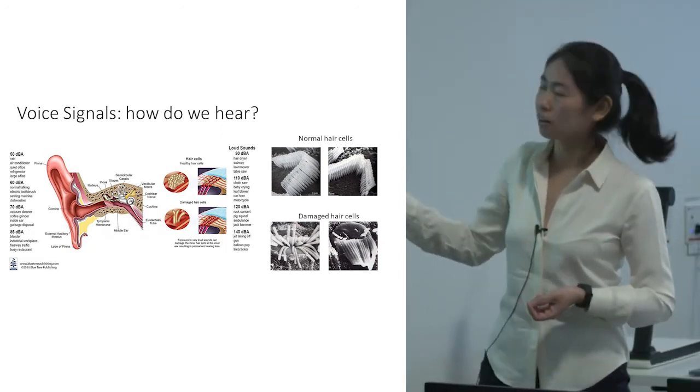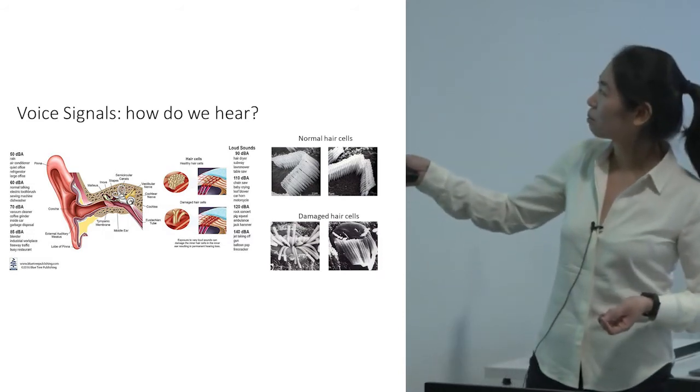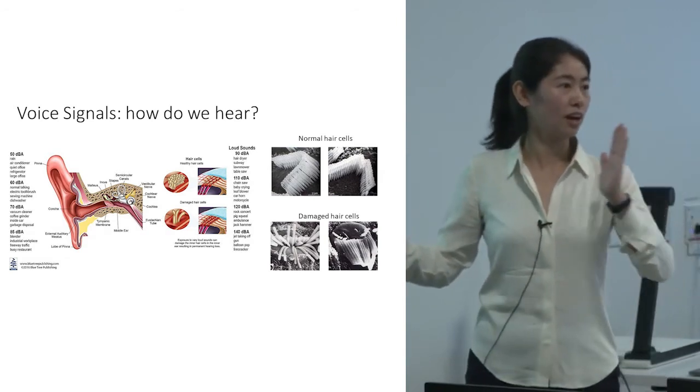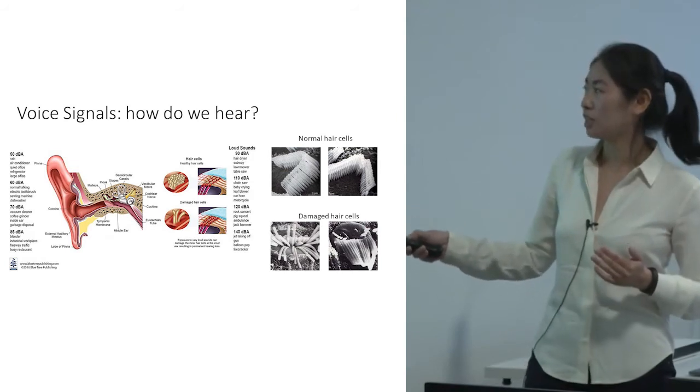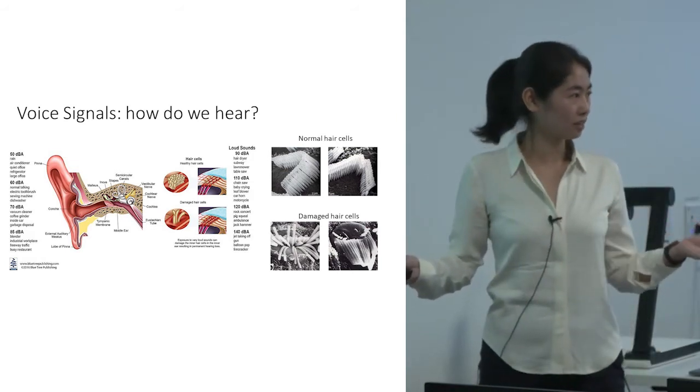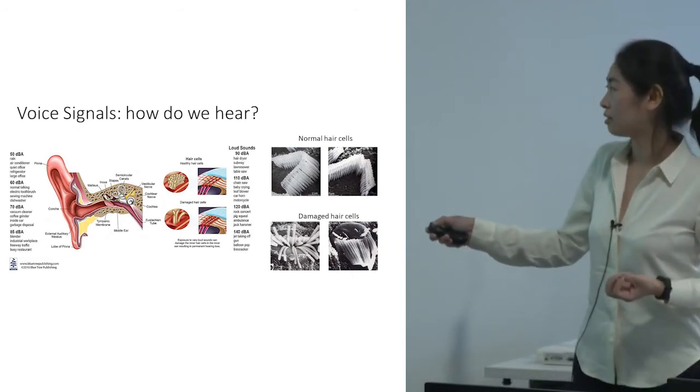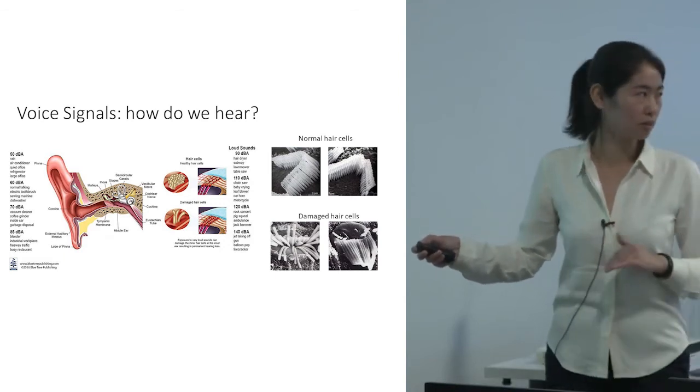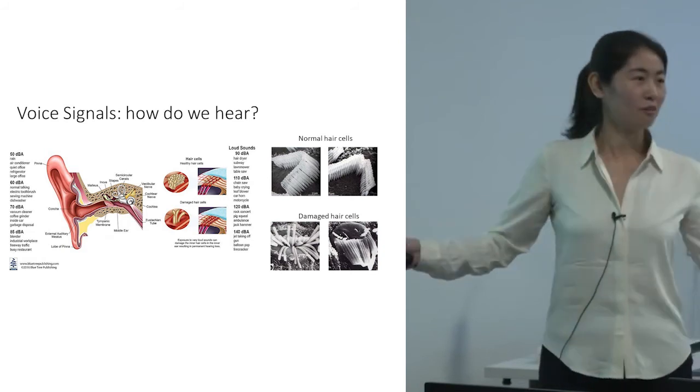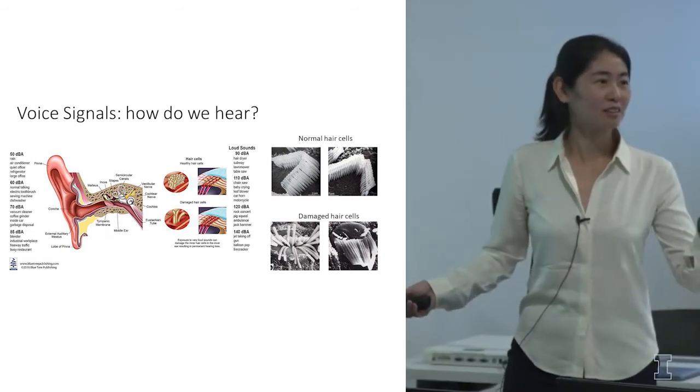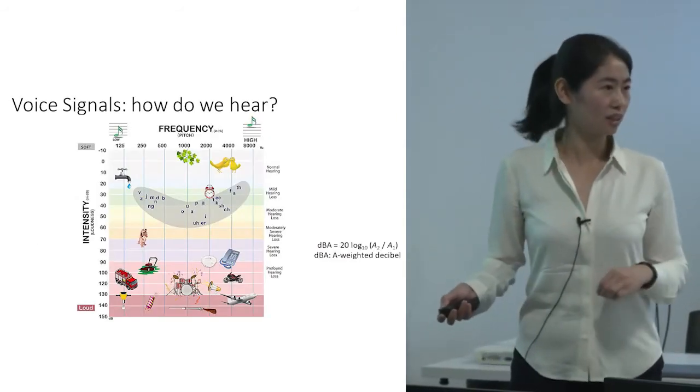And you can see these are scanning electron microscope images of our hair cells, and these are normal hair cells. And you can see they're aligned periodically in a very neat order, and those are healthy ones in our ear. But if we constantly hear very loud noises, our hair cells can be damaged permanently. And the below images are some of the hair cells that are damaged that I found on the internet. So one thing to keep in mind is not to constantly listen to very loud noises.